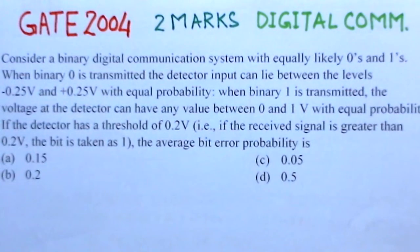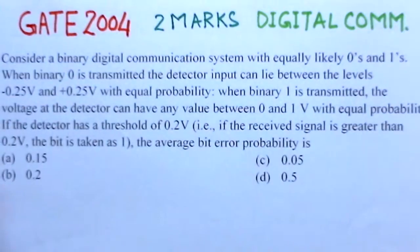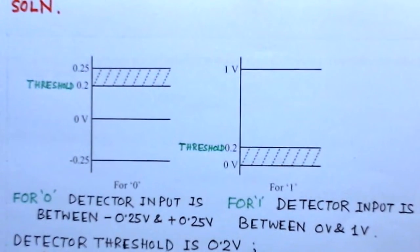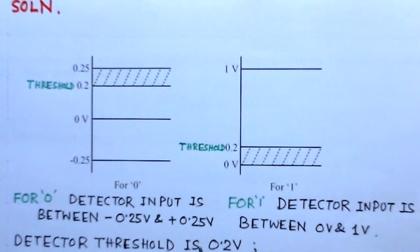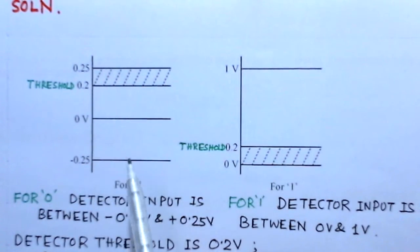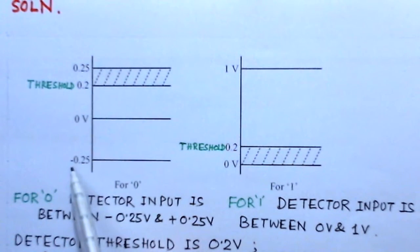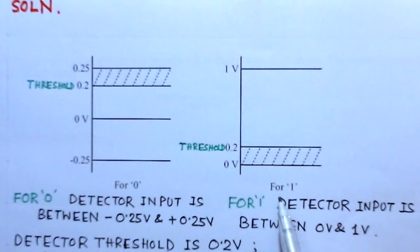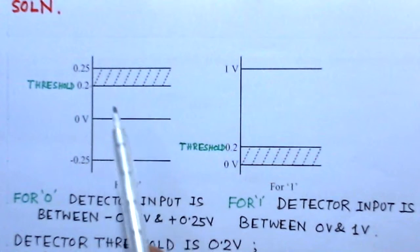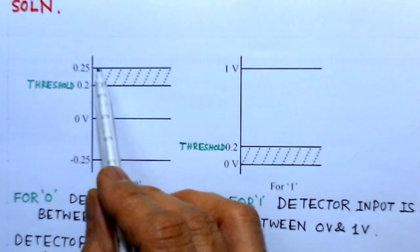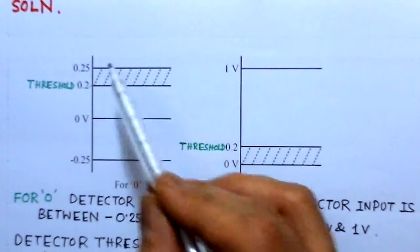We'll look for the solution to this problem. As depicted in the figure, for zero to be detected, detector inputs lie between minus 0.25 to plus 0.25 volts. For one to occur, it is between 0 and 1 volts. The threshold value is 0.2 volts, meaning when the input is more than 0.2 volts it is detected as 1. So between 0.2 and 0.25 volts there is an overlap region.